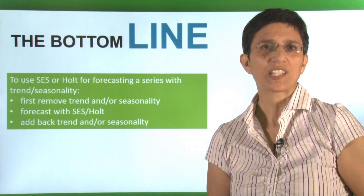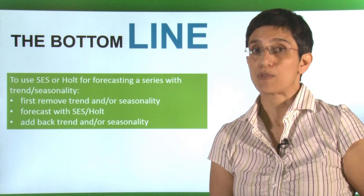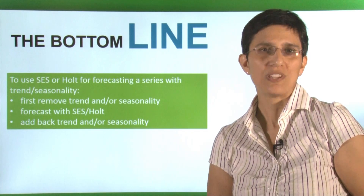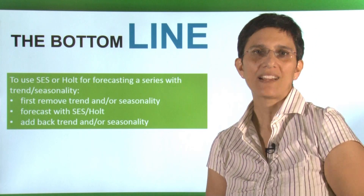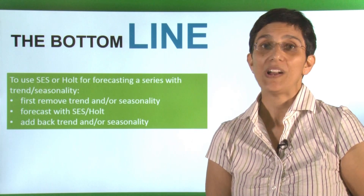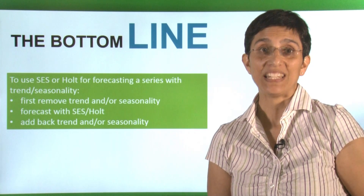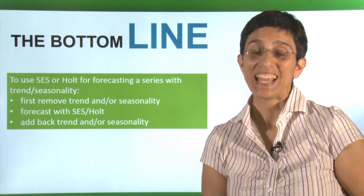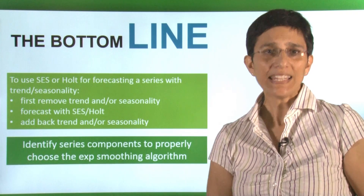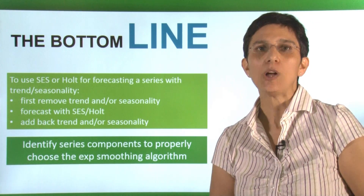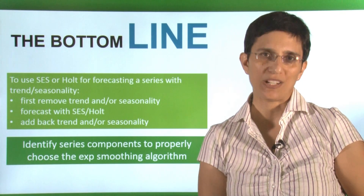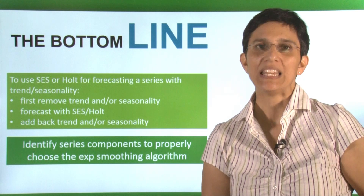If you're going to use simple exponential smoothing for forecasting a series with trend and seasonality, you first have to remove trend and seasonality, then use the method, and then bring them back. Similarly, if you're going to use Holt's method for a series that has seasonality, remember to first remove that seasonality, then use Holt, and finally bring back seasonality. Lastly, it really helps to identify the series components properly, and then you can choose the right exponential smoothing algorithm from all the different choices in this family.